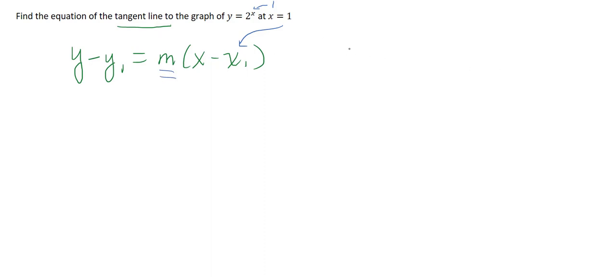Well, remember your slope is your derivative evaluated at that point. So the derivative of this function 2 to the x would be 2 to the x ln of 2, because that's the a to the x formula. And now evaluating it at 1, I get 2 to the first power ln of 2.